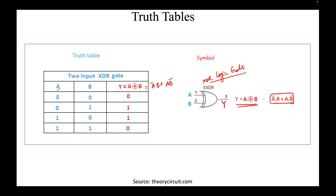For the second row, A=0 and B=1: A-bar·B + A·B-bar = 1×1 + 0×0 = 1. For the third row, A=1 and B=0: 1-bar×0 + 1×0-bar = 0×0 + 1×1 = 1. So the output is 1.